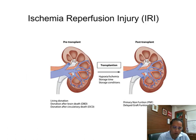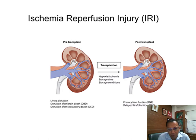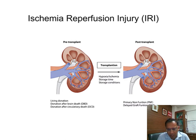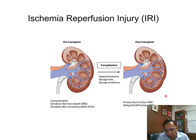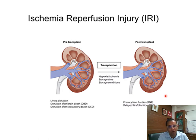Coming to IRI or ischemia reperfusion injury — this happens as an acute condition and specifically depends upon how much hypoxia or ischemia time there is from pre-transplant to the time of actual transplant. The ischemia time governs the ischemia reperfusion injury, and this also depends upon the storage time and storage conditions in which the kidney from the donor is transported to the patient. This may cause delayed graft function or primary non-function in the transplanted organ.